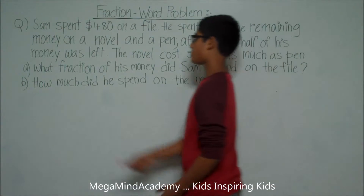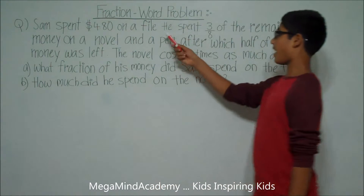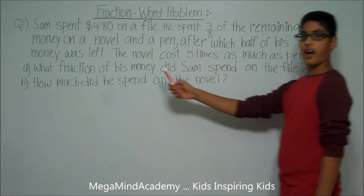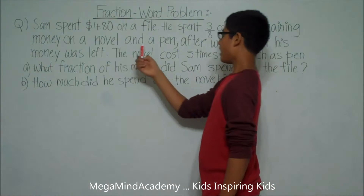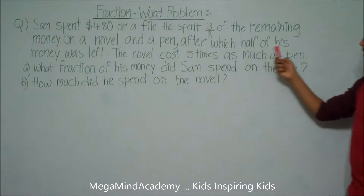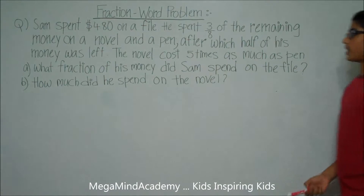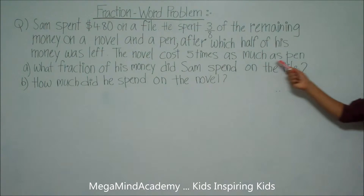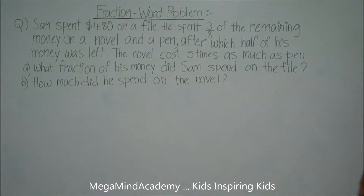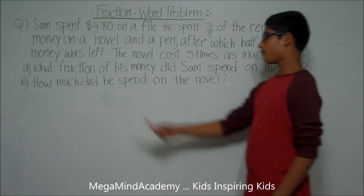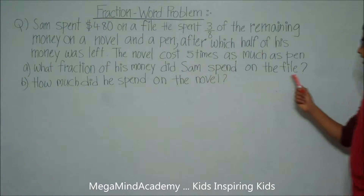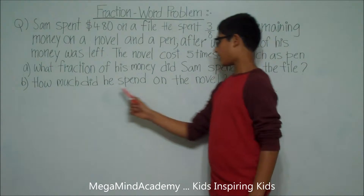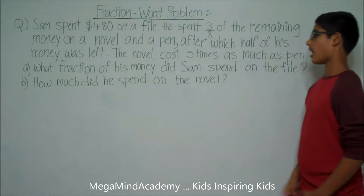Sam spent $4.80 on a file. He spent three-eighths of the remaining money on a novel and a pen, after which half of his money was left. The novel costs five times as much as a pen. Question A: What fraction of his money did Sam spend on the file? Question B: How much did he spend on the novel?